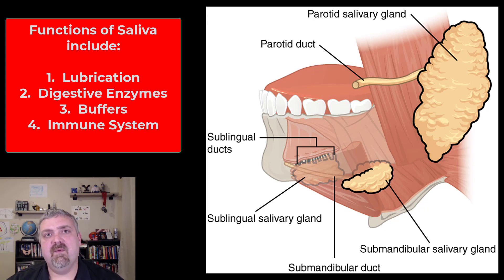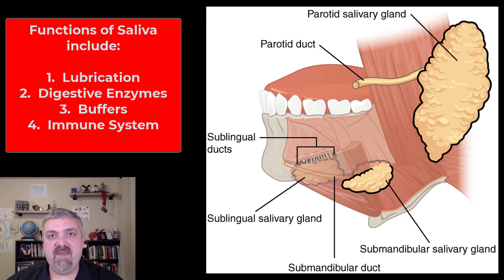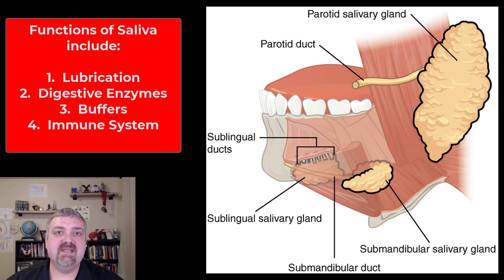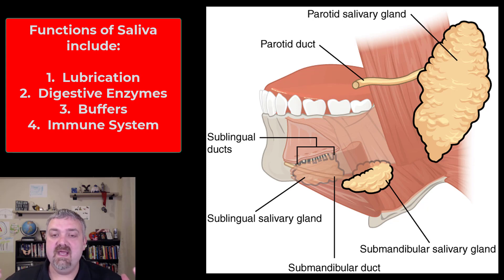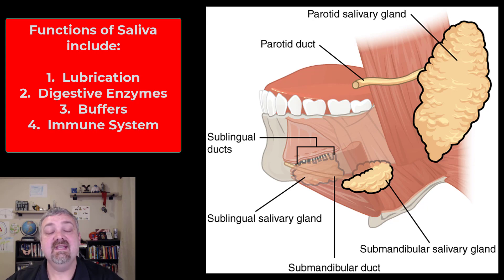Speaking of microbes, your saliva also has secretory IgA antibodies that hopefully stop a lot of pathogens before they can get into your body. Your saliva also has lysozyme, an antimicrobial compound that breaks down cell walls — especially effective at stopping gram-positive bacteria like strep and staph. As you can see, there's a whole lot going on in your saliva, and that doesn't even count the water and mucus used to lubricate your food so you can swallow it. Saliva is important, probably more important than you give it credit for.